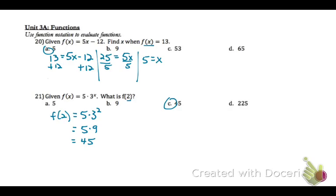On number 20, we're given the function f(x) equals 5x minus 12. We need to find x when f(x) equals 13. So you're going to plug in 13 for f(x) to get the equation 13 equals 5x minus 12. We need to solve for x, so let's start by adding 12 to both sides to get 25 equals 5x. Then divide both sides by 5 for the answer x equals 5, choice A.